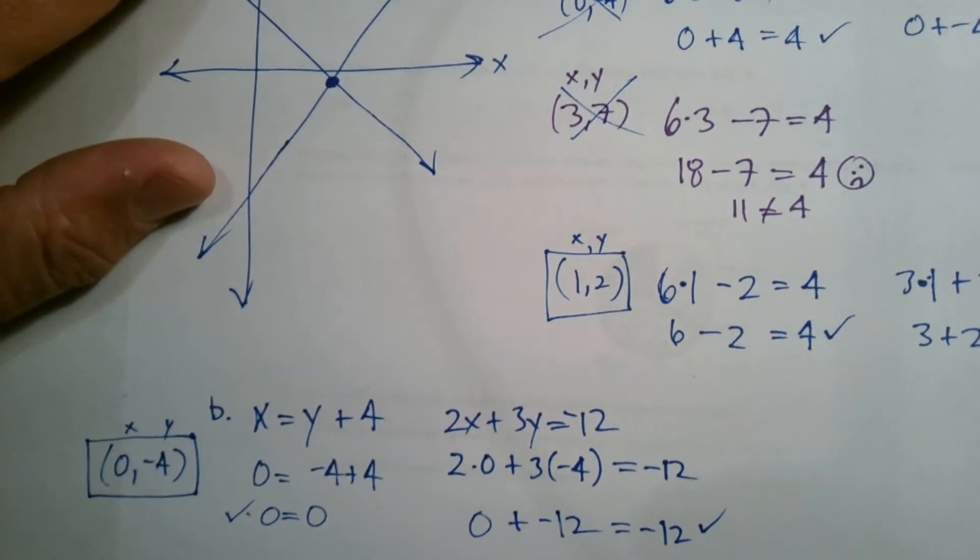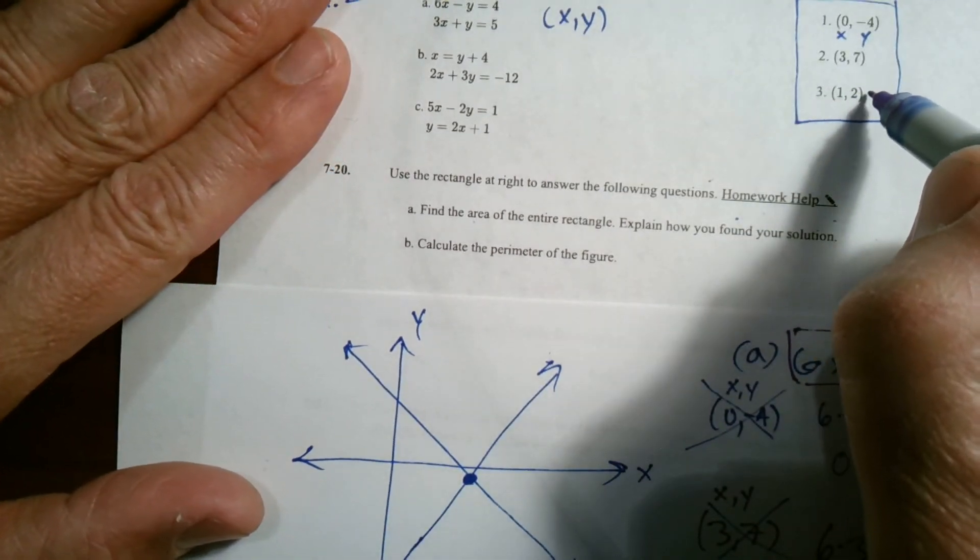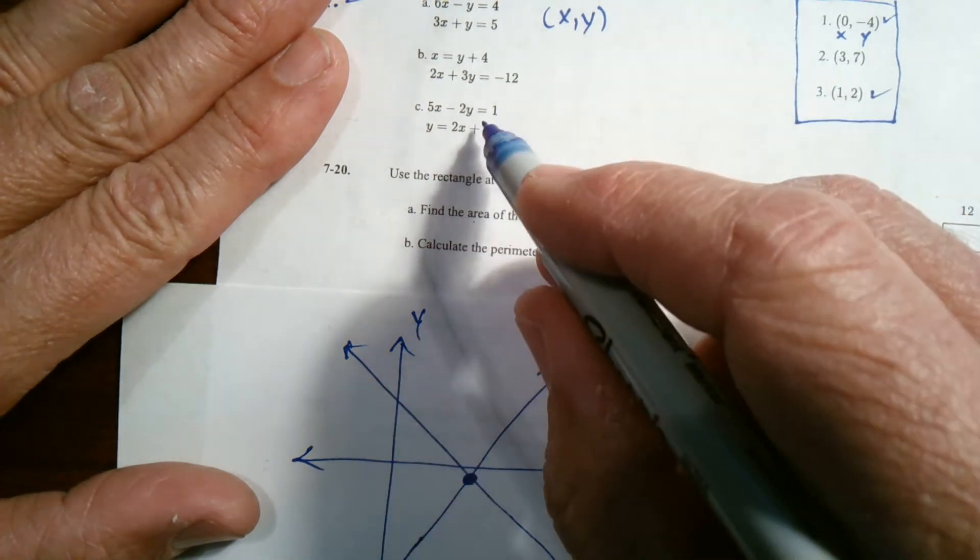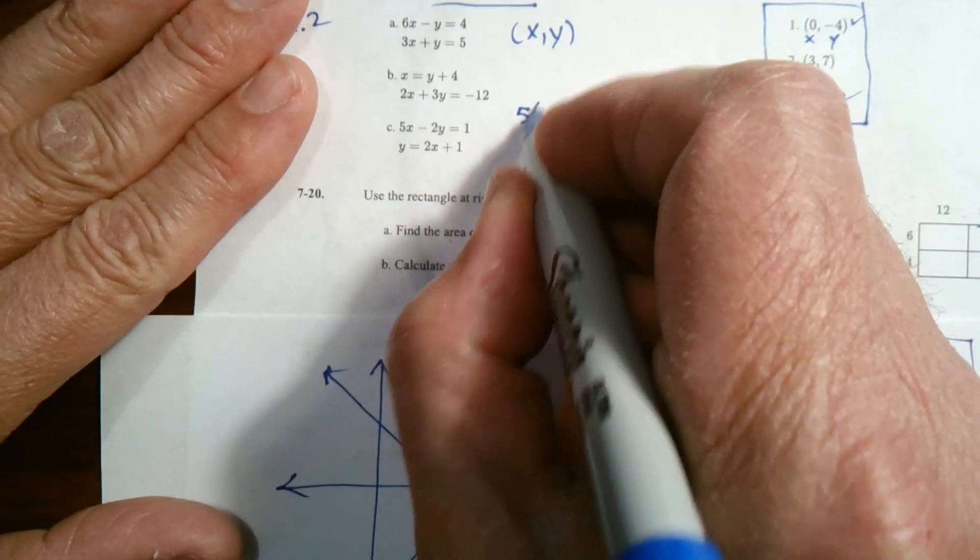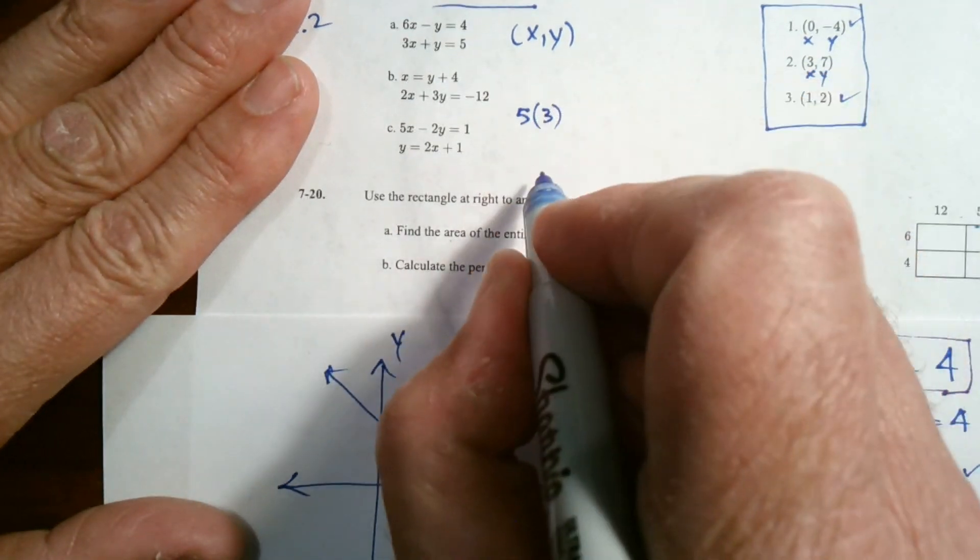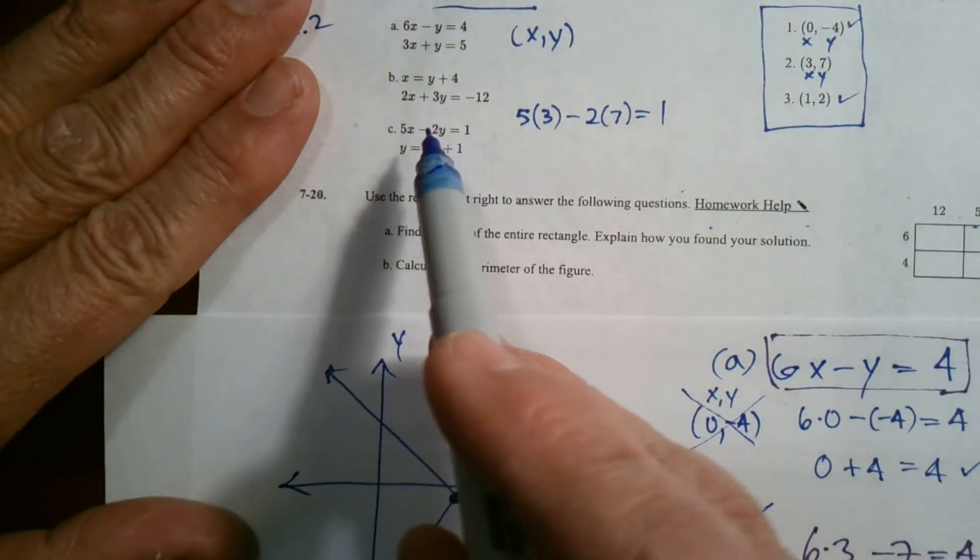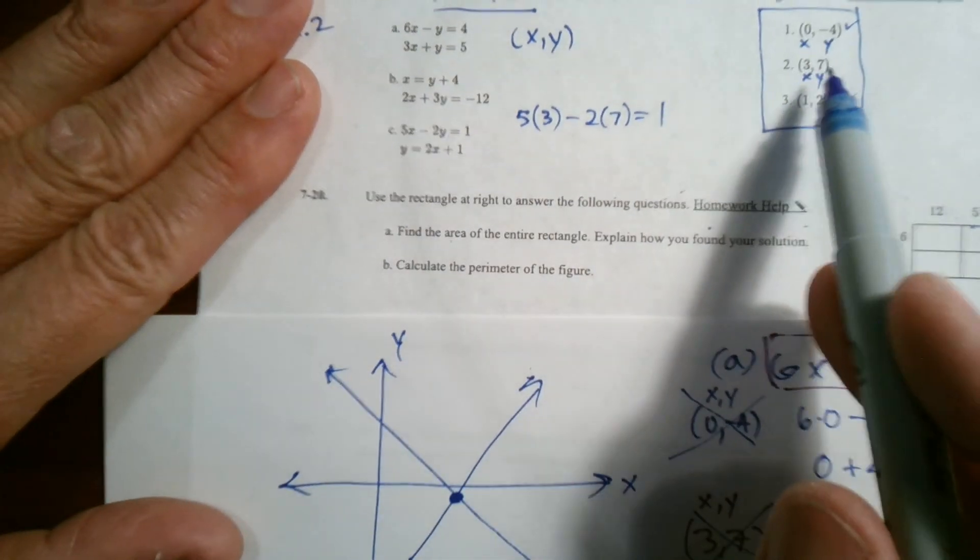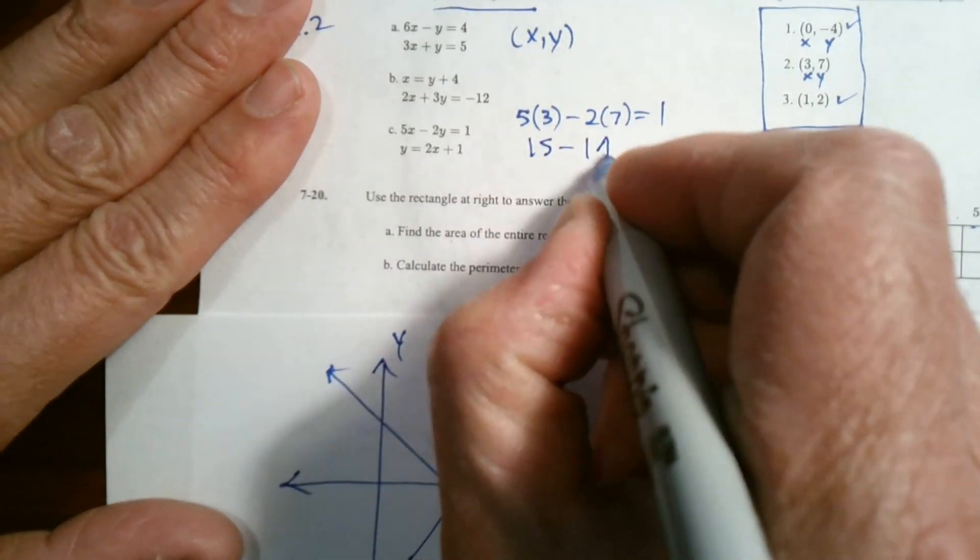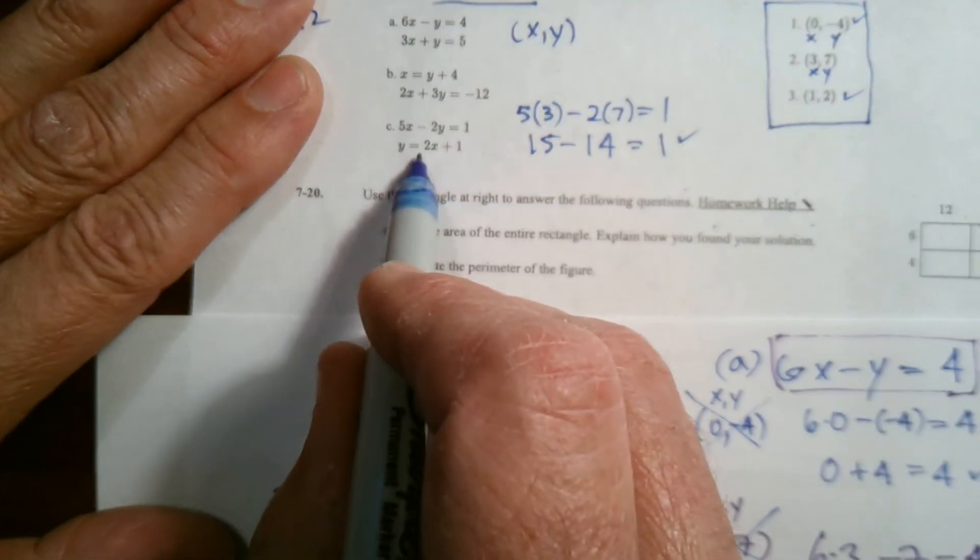So process of elimination, then the part C would be, so I've already used up the 0, 4. I've used up 1, 2. So this one has to be this. But let's just double check it. So it'd be 5 times, remember that's my x, that's my y. So 5 times 3 minus 2 times 7, does it equal 1? So I'm checking the first equation, putting in the 3, 0 and the x and the y. So that's 15 minus 14. 15 minus 14, sure enough, does equal 1. So it checks out for that one.